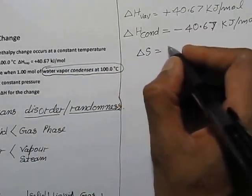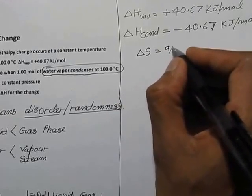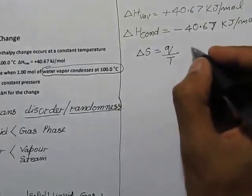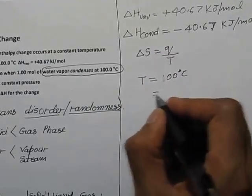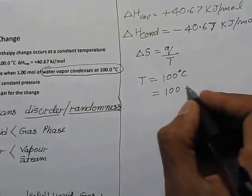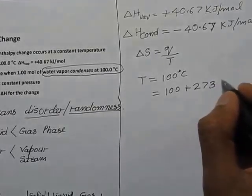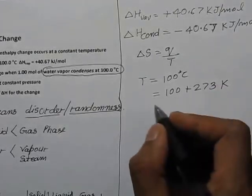Now ΔS = Q/T. Temperature is given here as 100 degrees Celsius, which will be equal to 100 degrees plus 273.